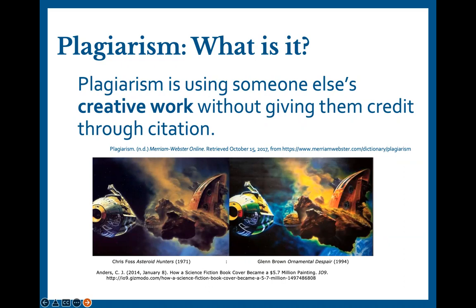The remainder of this presentation will concentrate on text sources for writing papers. But as a non-text example, on the left side of the screen is a painting by the artist Chris Foss titled Asteroid Hunters from 1971, and on the right side is a painting by Glenn Brown titled Ornamental Despair from 1994. Most of us would probably agree that Glenn Brown plagiarized Chris Foss' painting, despite the brighter colors, additional details, and some other minor changes.